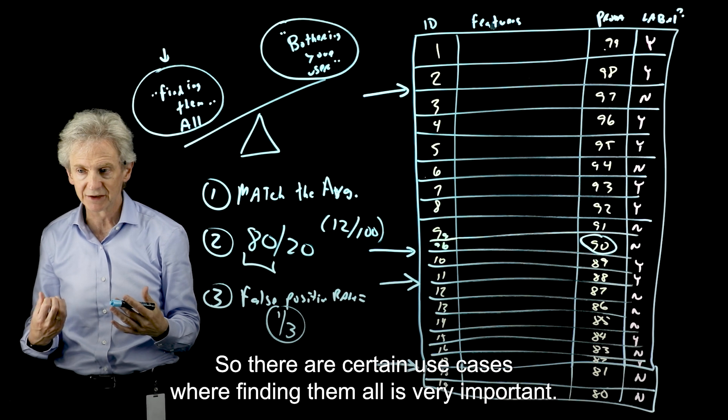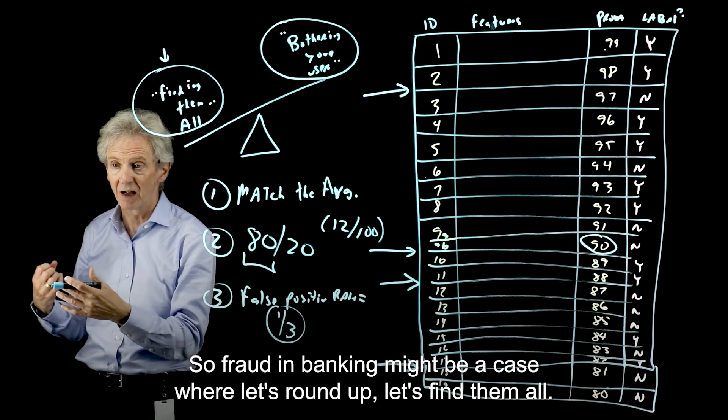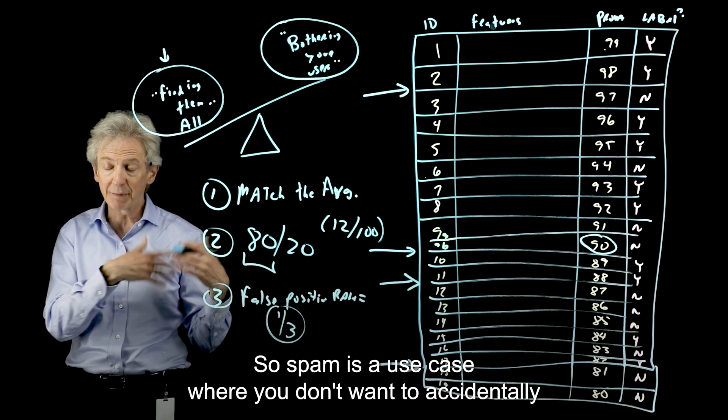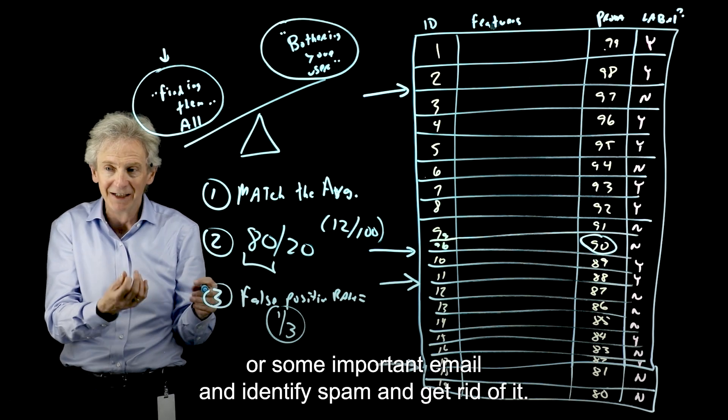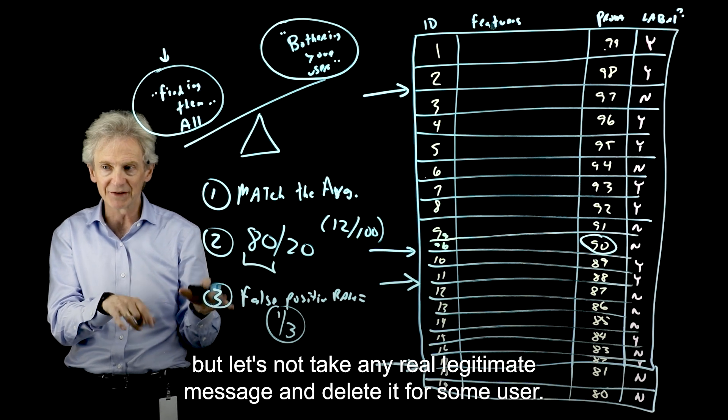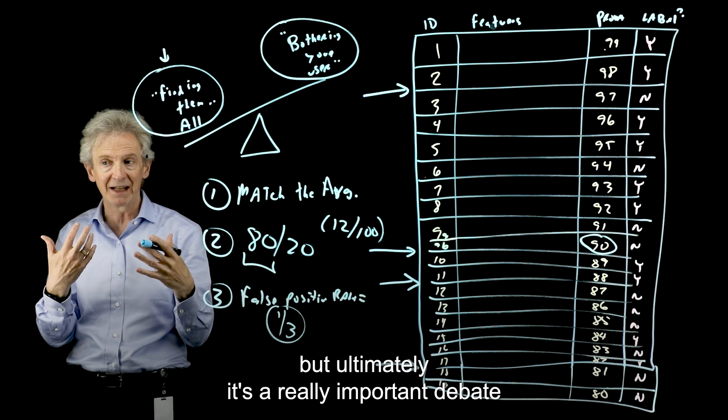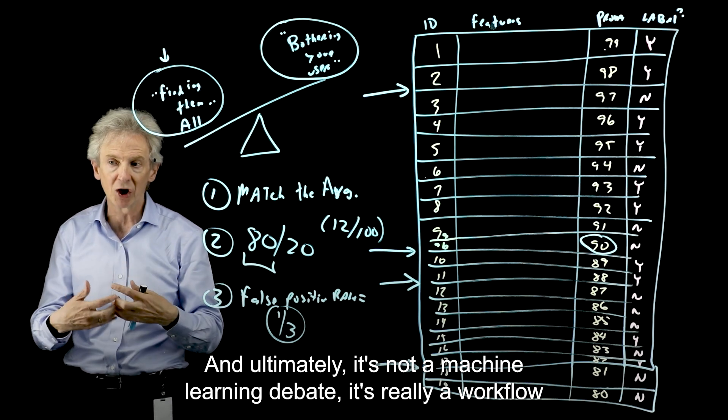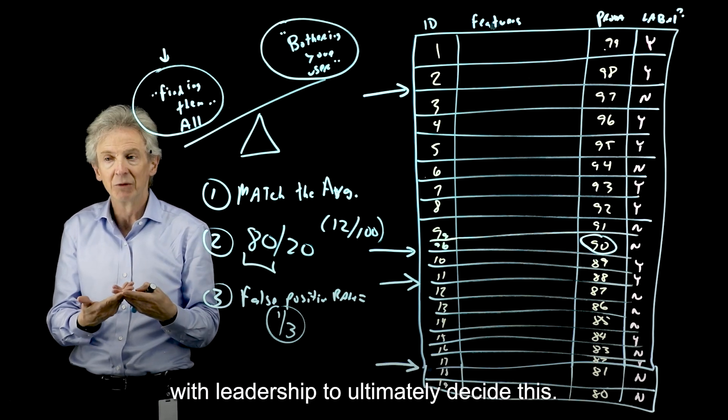And ultimately, it depends on your use case. So there's certain use cases where finding them all is very important. So fraud in banking might be a case where let's round up, let's find them all. I don't care if I create more work for me and my team. And there are some use cases where you don't want to get that wrong. So spam is a use case where you don't want to accidentally delete that email from somebody's mother or some important email and identify spam and get rid of it. So you might want to round down a little bit. Let's catch a bunch of spam, but let's not take any real legitimate message and delete it for some user. So it really depends on your use case. But ultimately, it's a really important debate that you will have as you move one of these models into production. And ultimately, it's not a machine learning debate. It's really a workflow, trade-off, ultimate success, goals of the project. It's that kind of debate that you'll have with leadership to ultimately decide this.